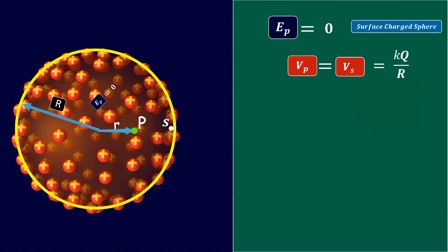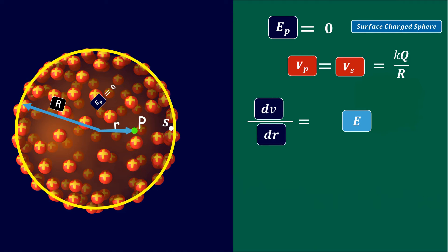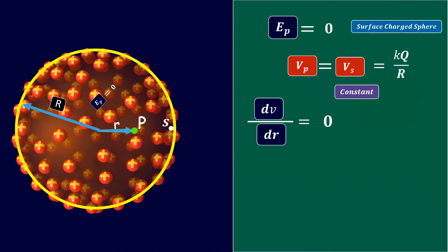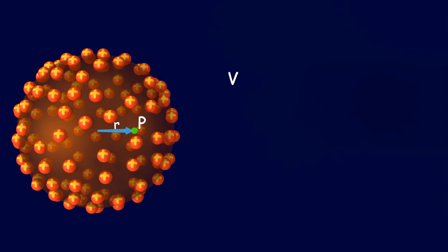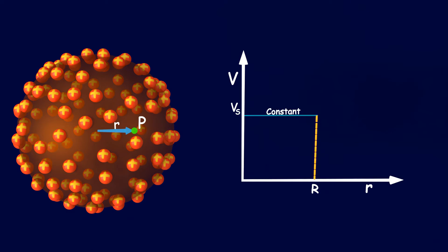We can also understand this through the equation dV = E·dr, or equivalently dV/dr = E. Since the electric field inside the sphere is zero, dV/dr equals zero, which implies V must be constant — the derivative of a constant is zero. Therefore, V inside is constant. The expressions for V outside, V surface, and V inside can be summarized. On a graph with V on the y-axis and r on the x-axis, as you move from the center to R the electric potential remains constant, then it suddenly decreases beyond the surface.